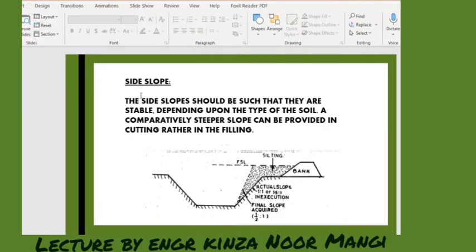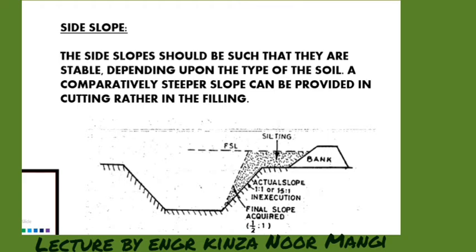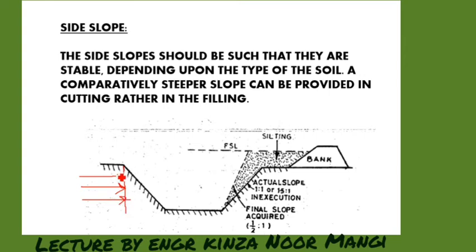The side slopes should be such that they are stable, depending upon the type of soil. A comparatively steeper slope can be provided in the cutting rather than in the filling. Looking at this figure, this is the trapezoidal shape in the cutting. If we were to make a rectangular shape instead, there would be a force of the soil onto it, and the soil would try to drag and create a sloped structure to make it stable.